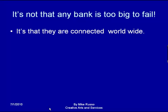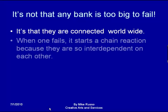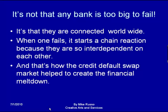It's not that any one bank is 'too big to fail' — it's that they are all connected worldwide through this credit default swap network. When one fails, it starts a chain reaction because they are so interdependent on each other. That's how the credit default swap market helped create the financial meltdown. I hope this has given you some idea of how credit default swaps work. It's somewhat simplified, but this is the fundamentals of it. My name is Mike Russo from Creative Arts and Services. Thank you for watching.